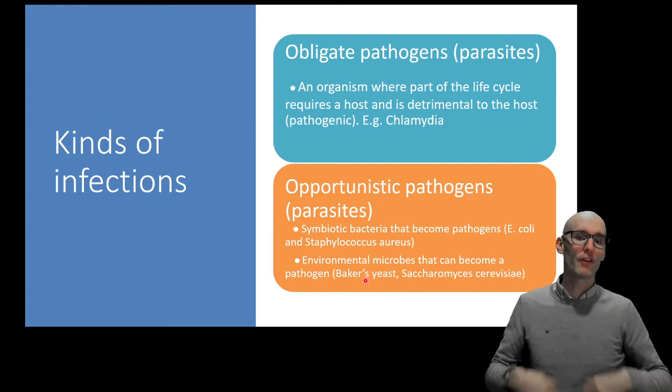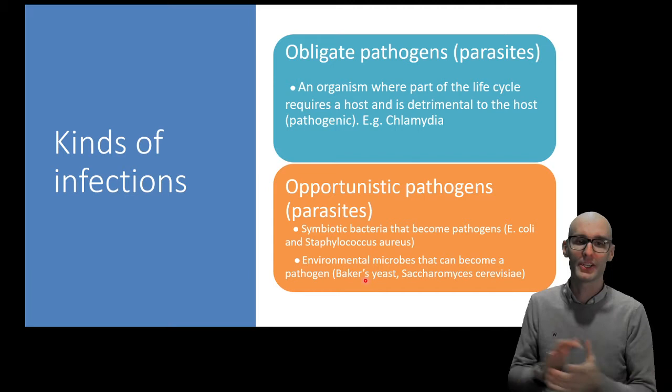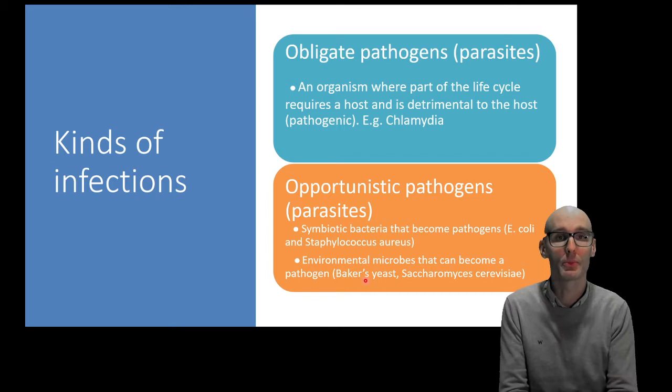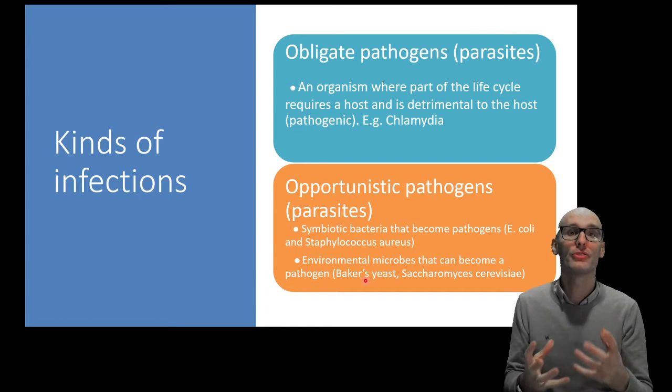Another one is environmental microbes. These aren't living on you or in you normally, they're normally out doing other things. Then they see an immune compromised individual or the appropriate opportunity to infect you. An example is baker's yeast. The yeast that we use for bread and even the yeast that we use for wine or beer can infect you if you're immune compromised. So it's an opportunistic pathogen rather than an obligate pathogen.